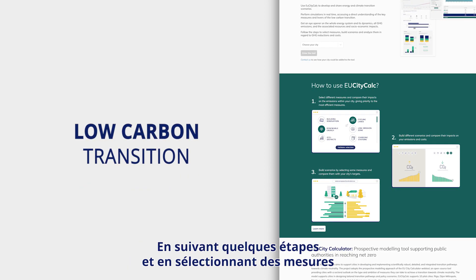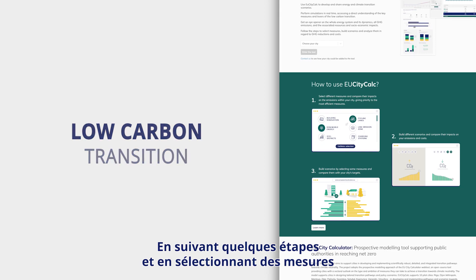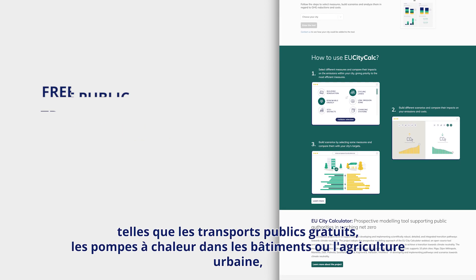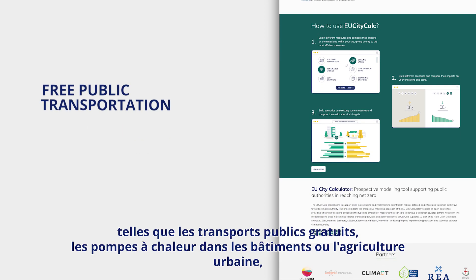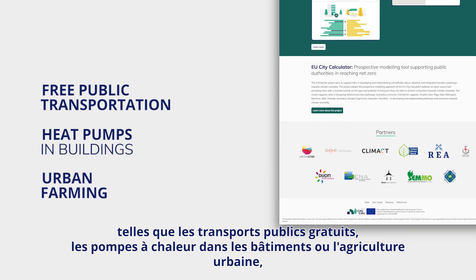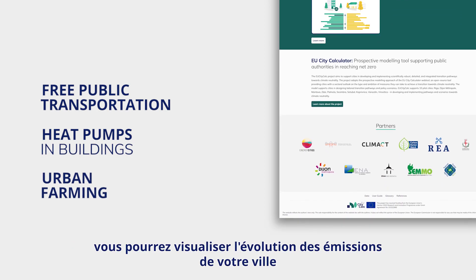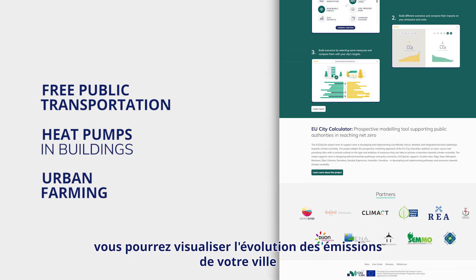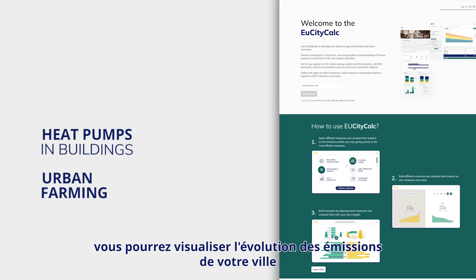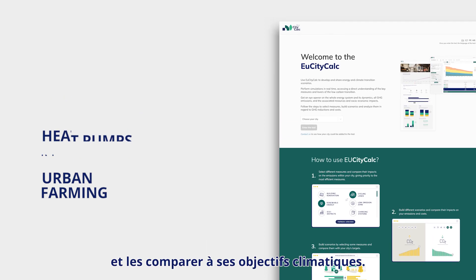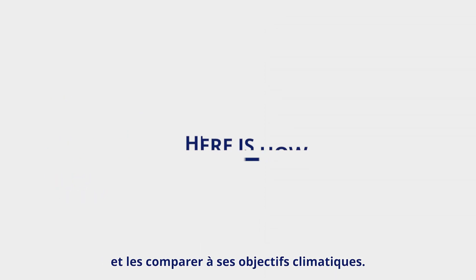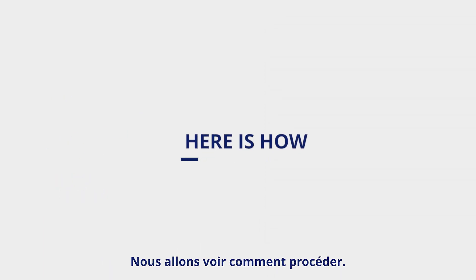By following a few steps and selecting from measures like free public transportation, heat pumps in buildings or urban farming, you can visualize how your city's emissions change and compare them with its climate targets. Here is how.